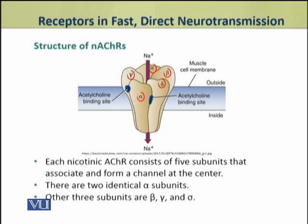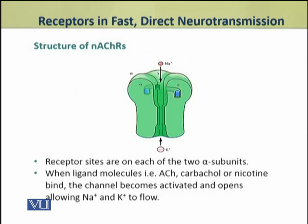There are two identical alpha subunits, and the other three subunits include the beta, gamma, and sigma subunits. The receptor sites are on each of the two alpha subunits. When ligand molecules — that is acetylcholine, carbachol, or nicotine — bind to these receptors, the channels become activated and they open, allowing sodium and potassium ions to flow.